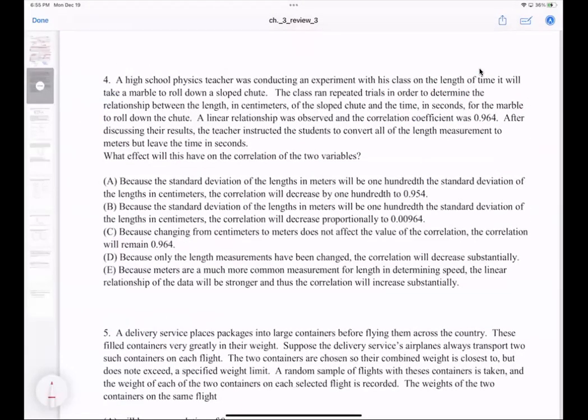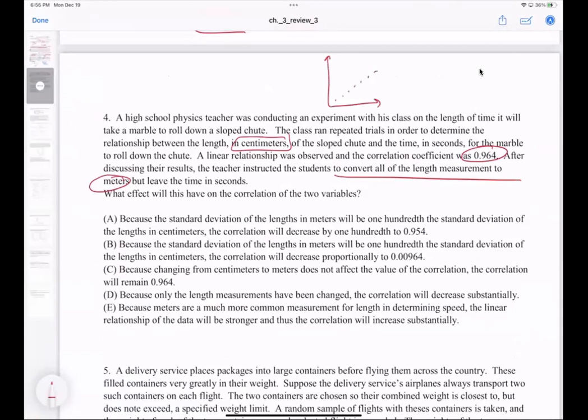Number four: A high school business teacher was conducting an experiment with linear relationship coefficient 0.964. What effect will converting all length measurements into meters have on the correlation coefficient? Originally it was in centimeters. If we had a scatter plot from 0 to 100 centimeters, those same dots would now be converted to 0 to 1 meters, but the time will stay constant. So is it going to change? Not really, because the shape and how they're displaced in the scatter plot won't change at all.